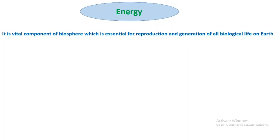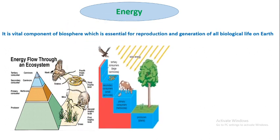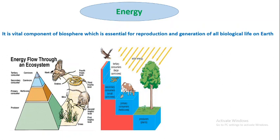Energy is a vital component of biosphere, essential for reproduction and generation of all biological life on earth. In the energy pyramid, plants at the bottom produce the most energy. Herbivores, the primary consumers, produce less energy. Carnivores, the secondary consumers, produce far less energy, and tertiary consumers at the top produce the least. The producers produce 10,000 kilocalories; some is lost as heat during metabolism, and only 1,000 kilocalories is passed to the primary consumers. The primary consumers pass 10 kilocalories to the secondary consumer after heat loss, and the secondary consumers transfer 10 kilocalories to the tertiary consumer.